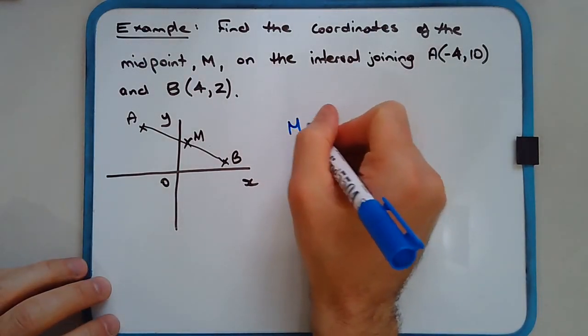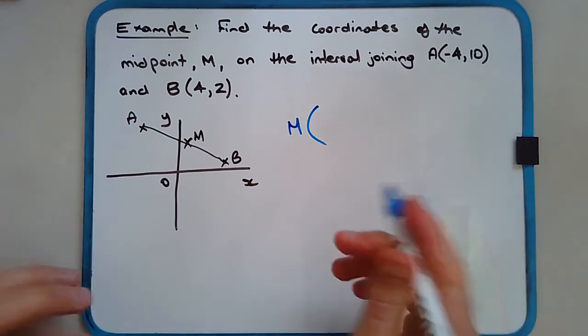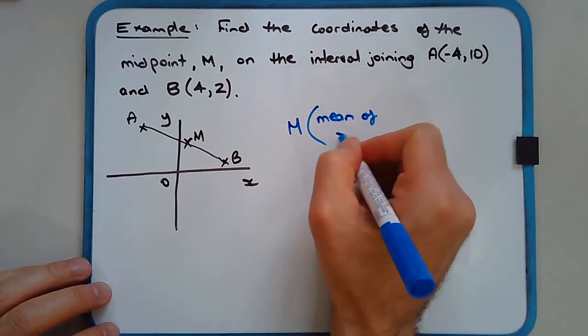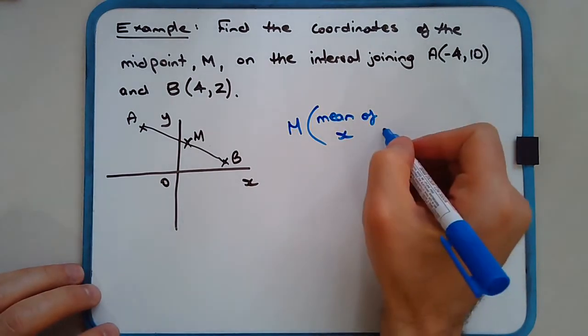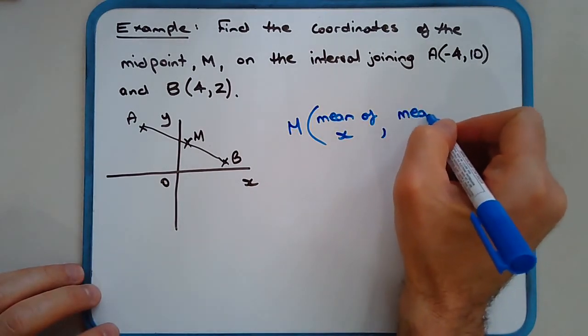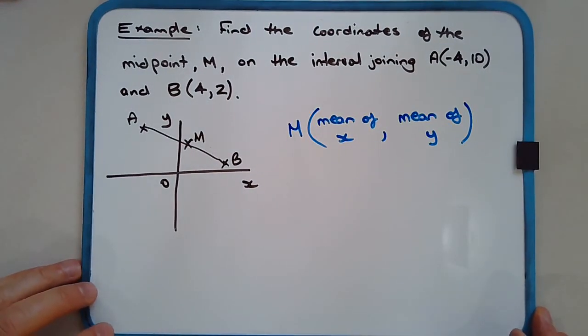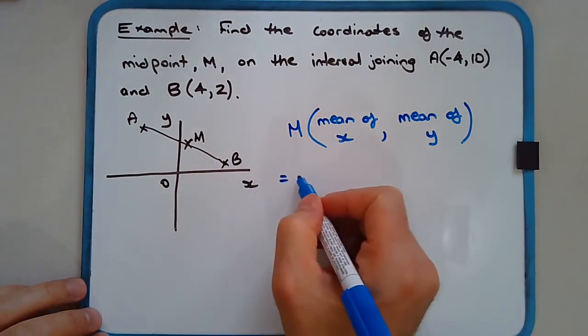M—sometimes I like to write this in plain English—is the mean of x, or the x's, comma the mean of y. So that's another way to understand the formula.